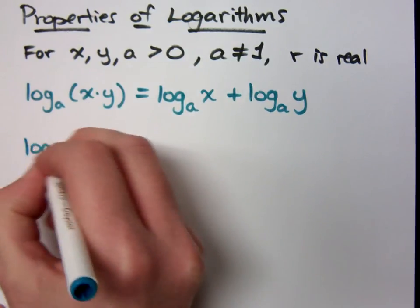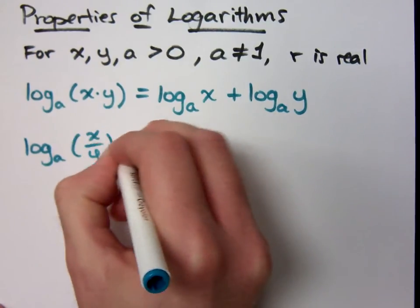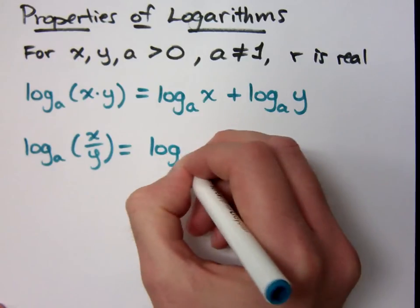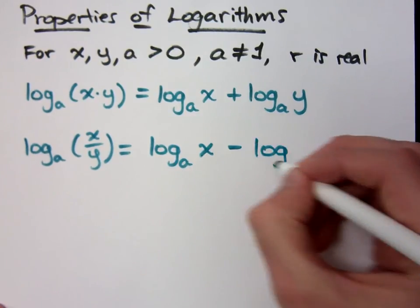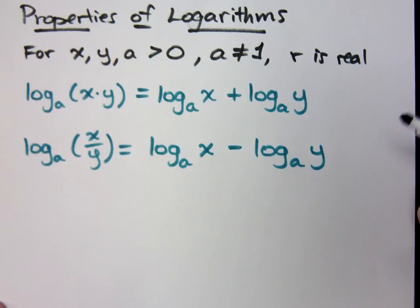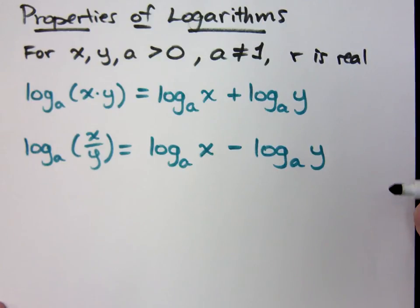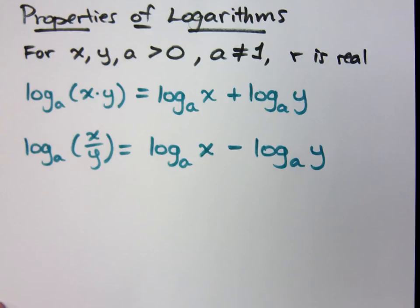If I have log with base a of the quotient x divided by y, this is going to be log with base a of x minus log with base a of y. Again, think back to what you know about exponents: if you were dividing with the same base, you subtract the exponents. If you multiply, you add. So it's very similar to that.